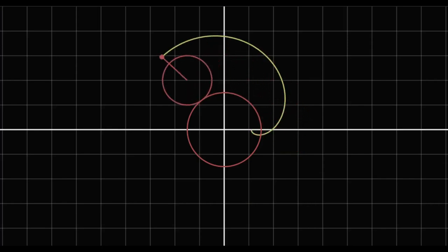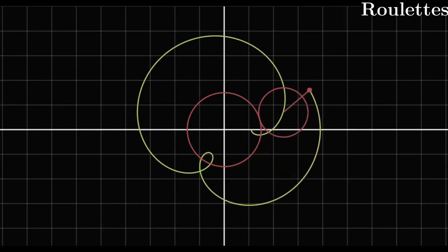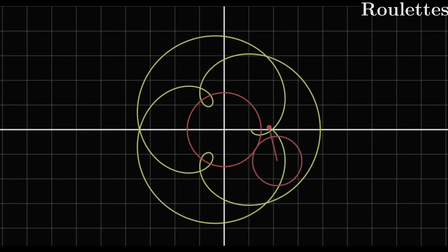When one curve rolls on another, it traces out a path called a roulette. There are many different types of roulettes, and in this video I aim to show you some of the most beautiful roulettes and how they can be made.